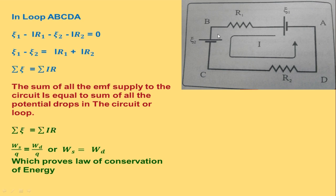For source E2, from point B to C, we are moving from the positive terminal to the negative terminal of the source — from positive to negative, meaning potential is dropping, so E2 is written as negative. From point C to D, R2 is a resistor, so it is also taken as negative. This gives us our general equation. Equating, IR1 and IR2 will be positive, and we have a sum of potential sources and a sum of potential drops. So the sum of all EMF supplied to the circuit equals the sum of all potential drops in the loop.